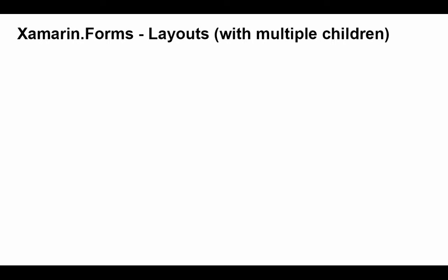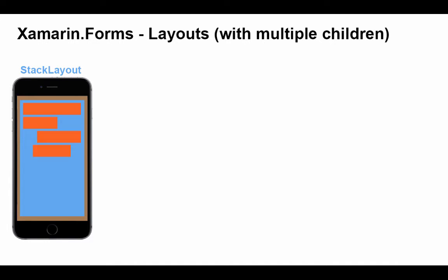Usually within a page, we're going to use a layout that allows us to have additional views or controls. A layout really is a view — it's a view that is simply a container. We have four types of layouts that can contain multiple children. The first is a stack layout, which was the one we saw in the sample program. The stack layout simply allows us to stack objects on top of one another, or side by side if we choose a horizontal orientation. We can choose to center those, start them at the top, or have them at the very bottom.